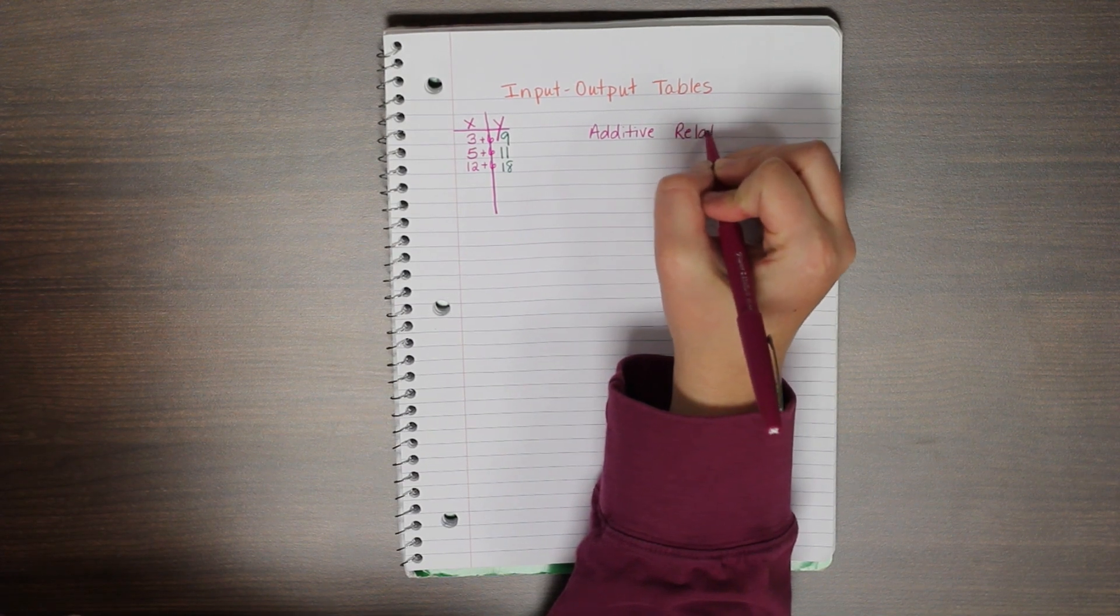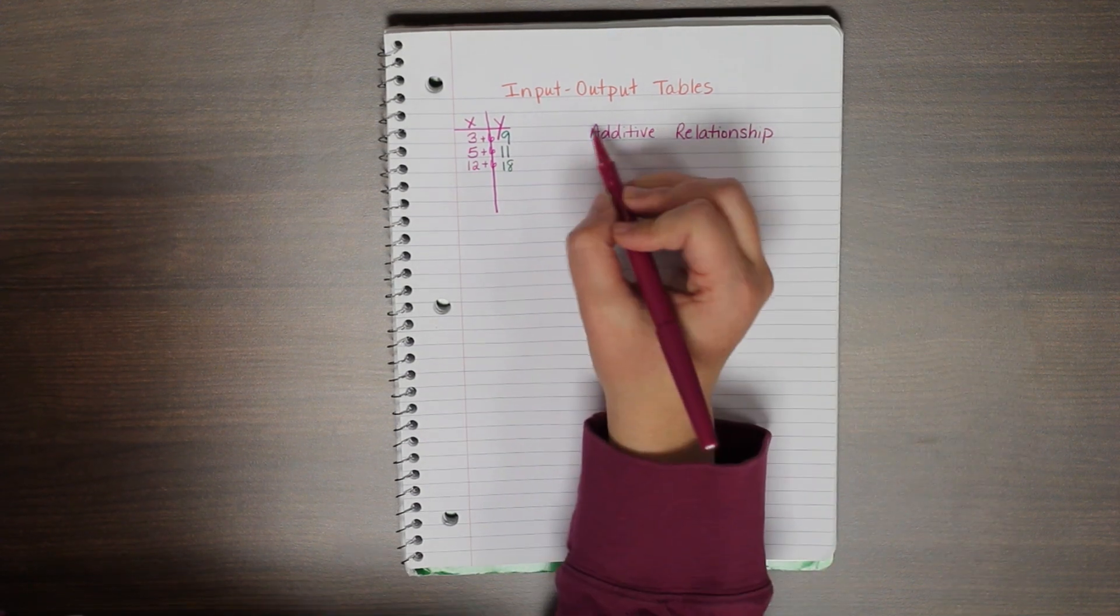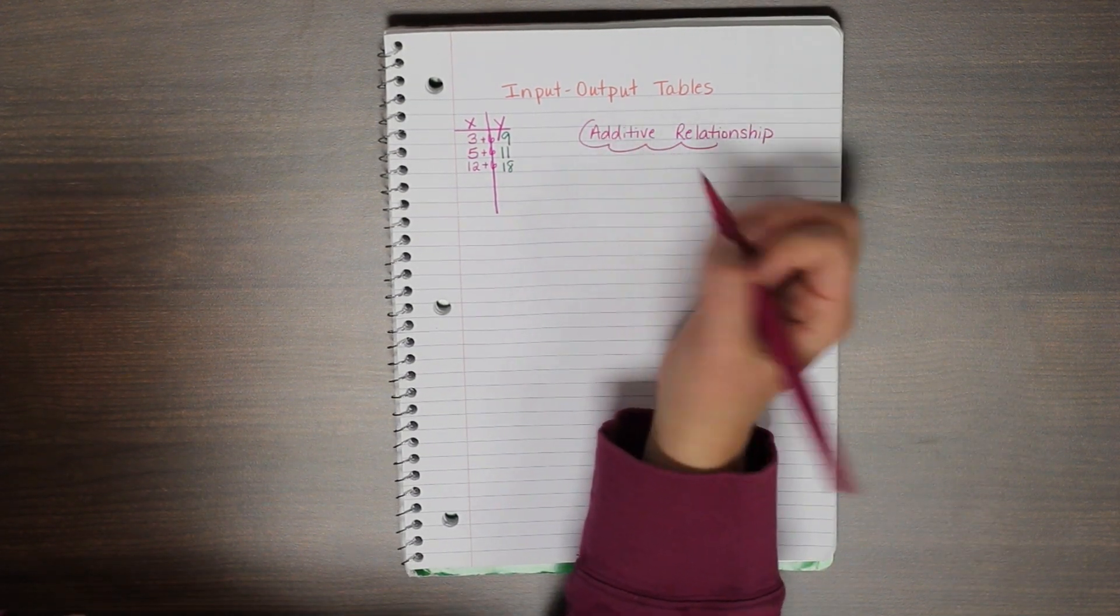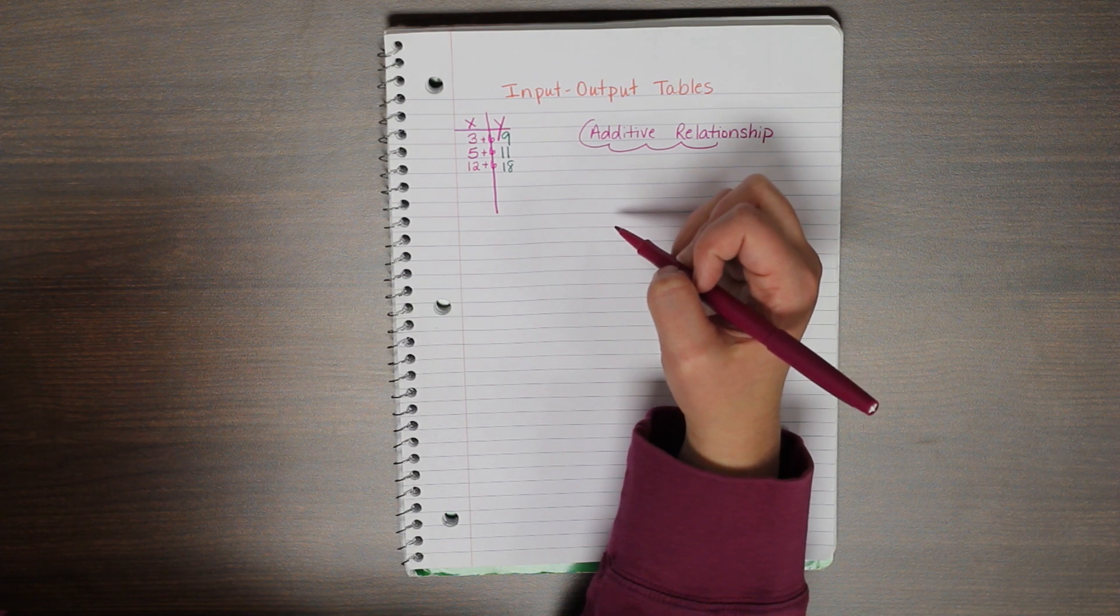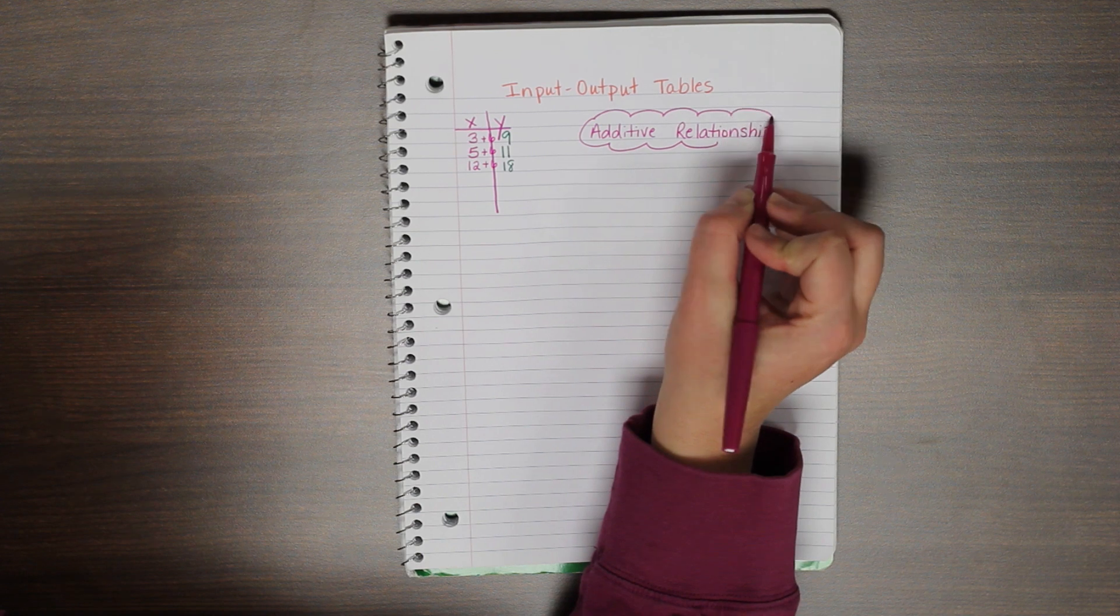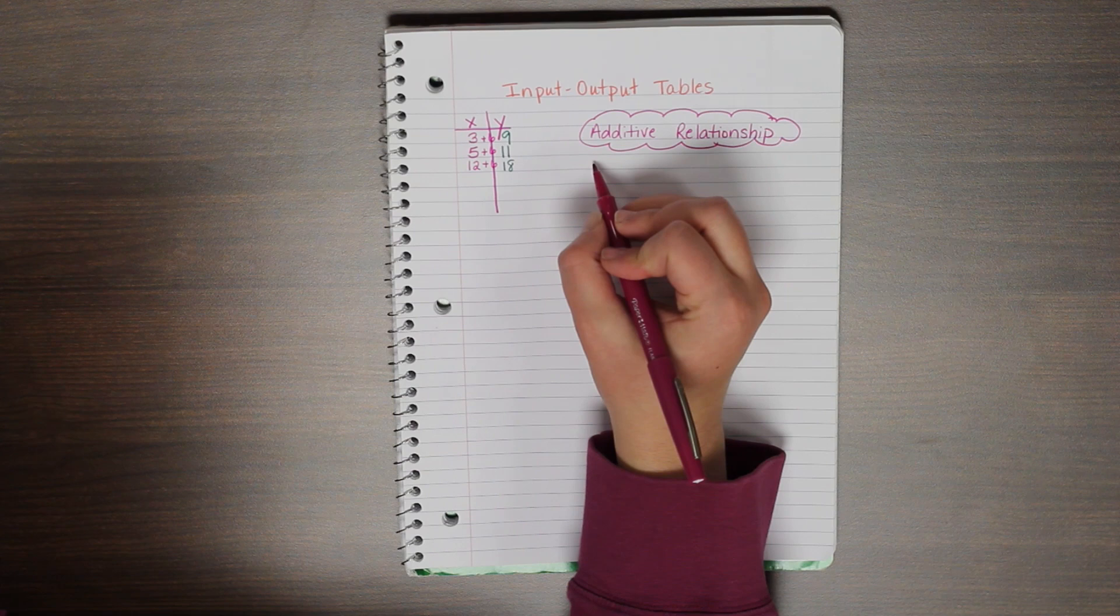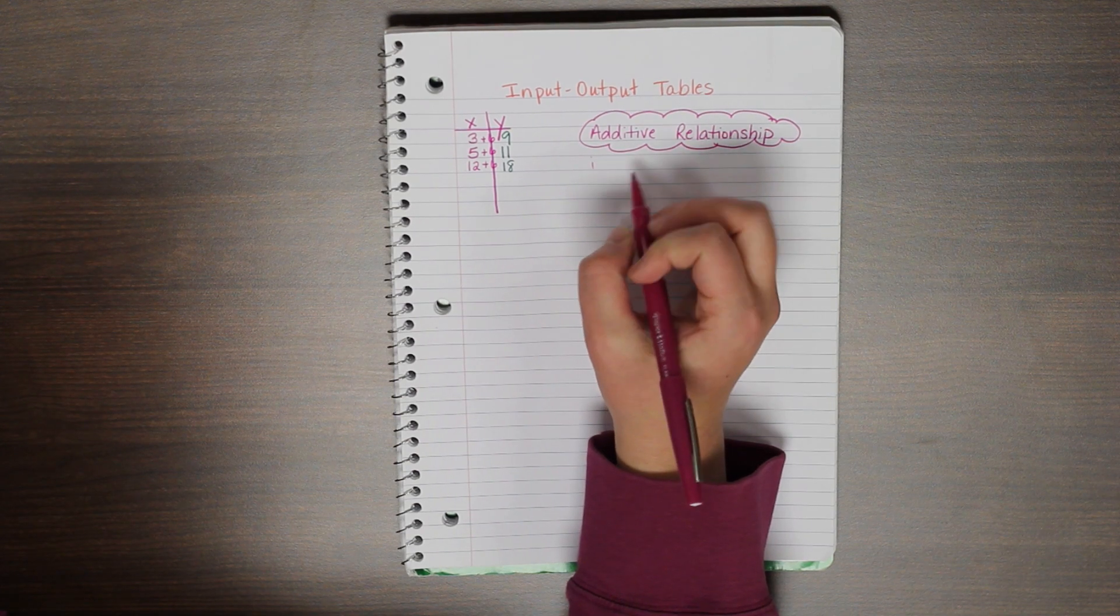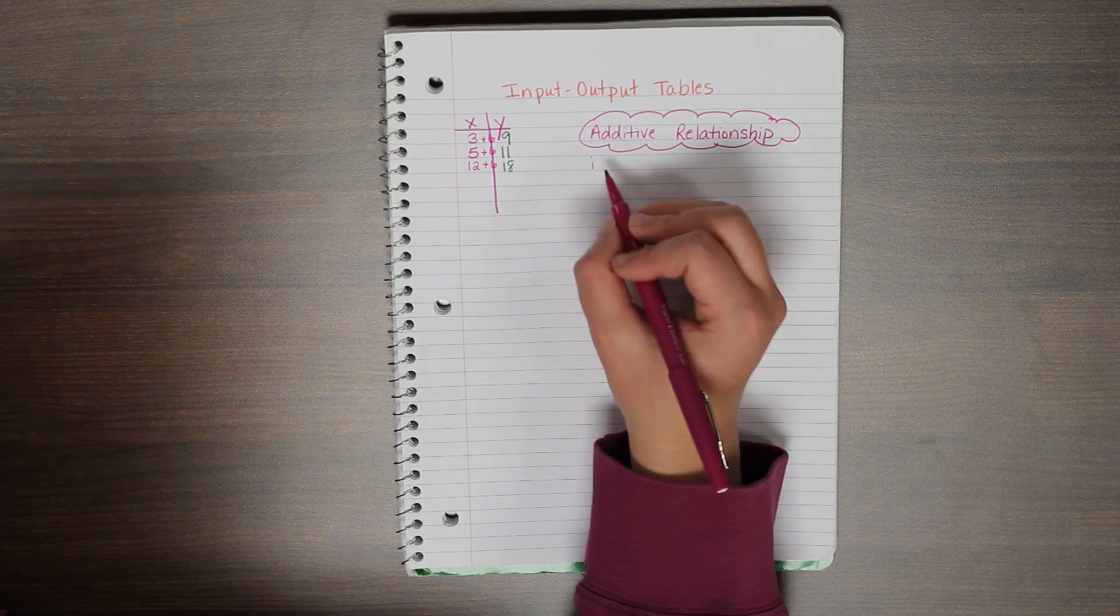Now we use the word additive, but additive could also include subtraction. So an additive relationship is when my rule or my pattern involves addition or subtraction, because remember that subtraction is the inverse of addition. So this is one of our vocabulary words, and this may or may not be a new term to you. An additive relationship involves addition or subtraction in the rule or pattern.